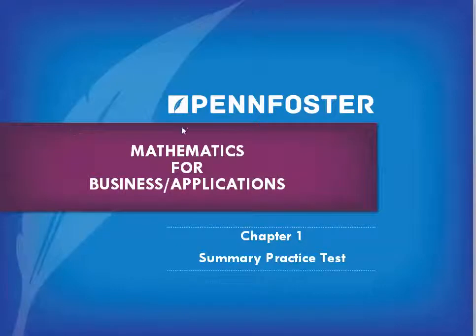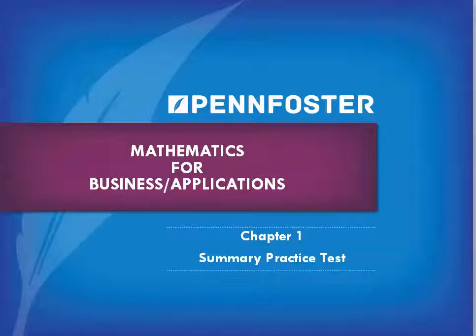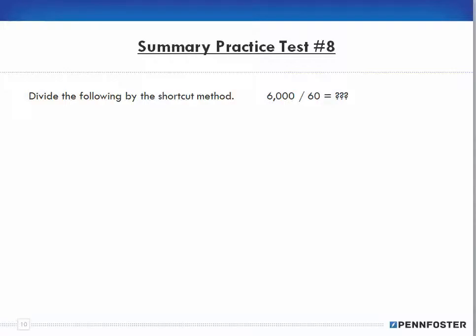Welcome back. This is Math for Business and Finance Students and Math Applications Students. We're on chapter one doing the summary practice test. We left off with problem seven, so now we go down to question number eight: divide the following by the shortcut method — 60,000 divided by 60.